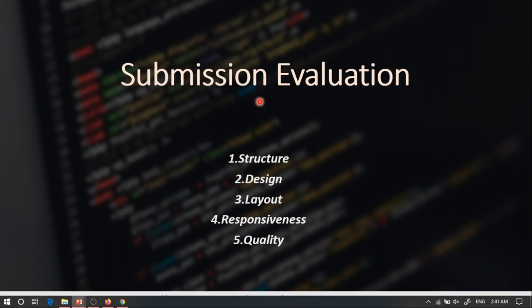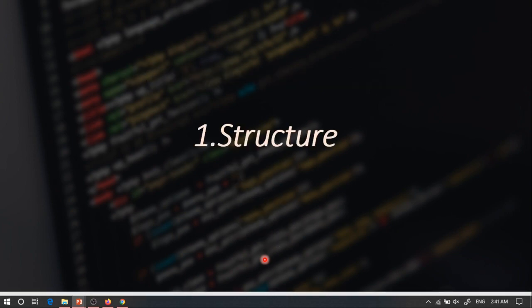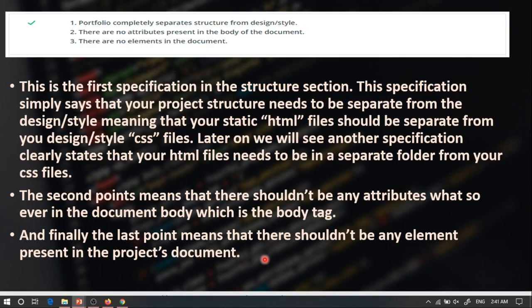The five sections are: the structure, the design, the layout, the responsiveness of your code, and finally the code quality. Now let's talk about the structure. Here in the first specification of the structure section, we're going to have the first point.